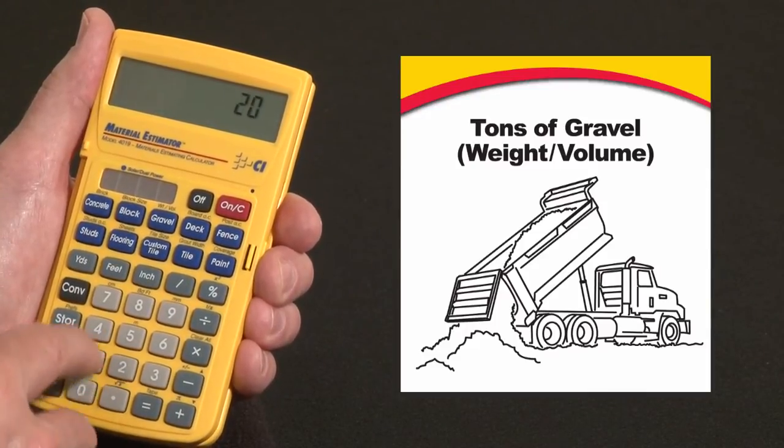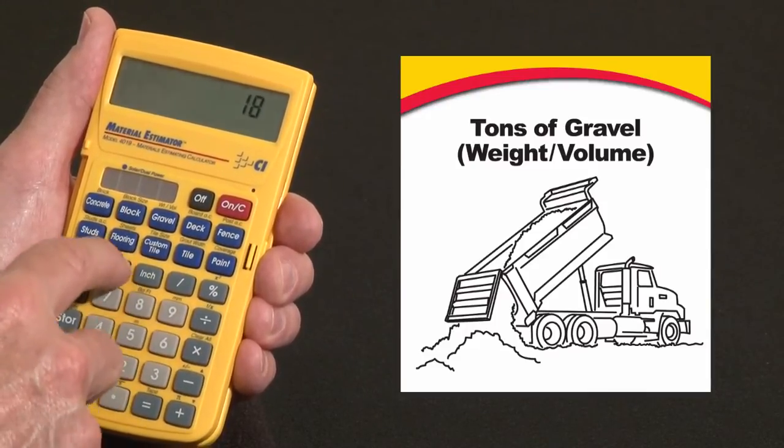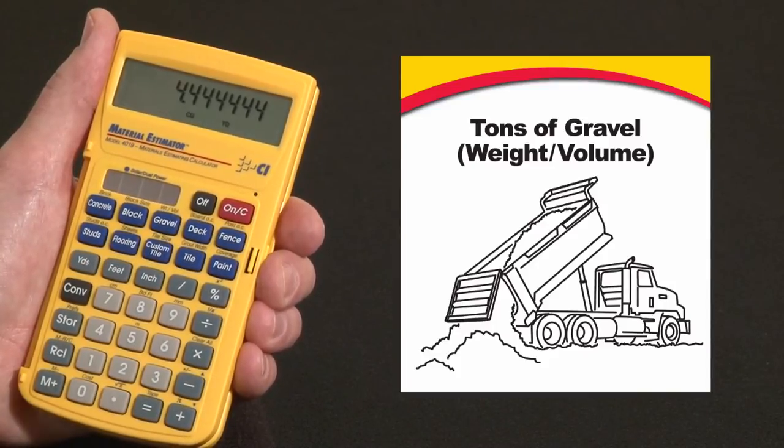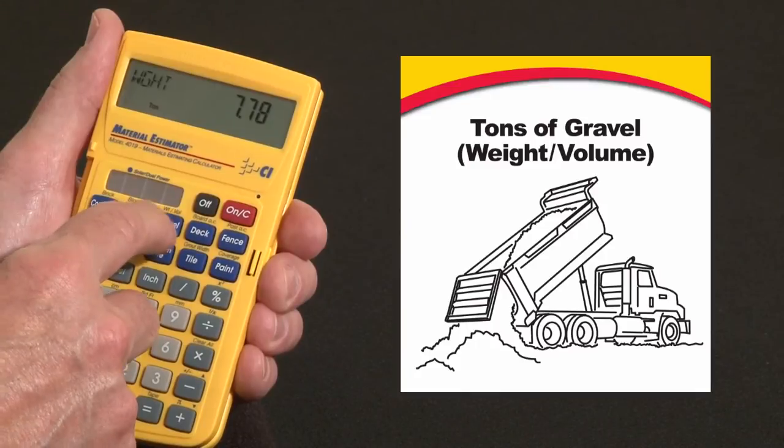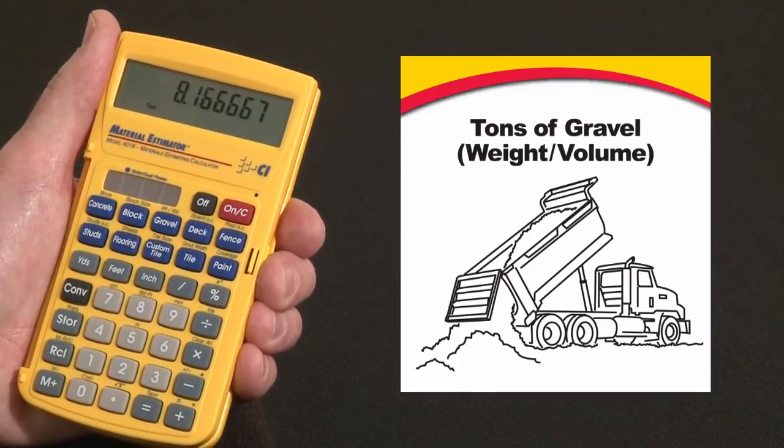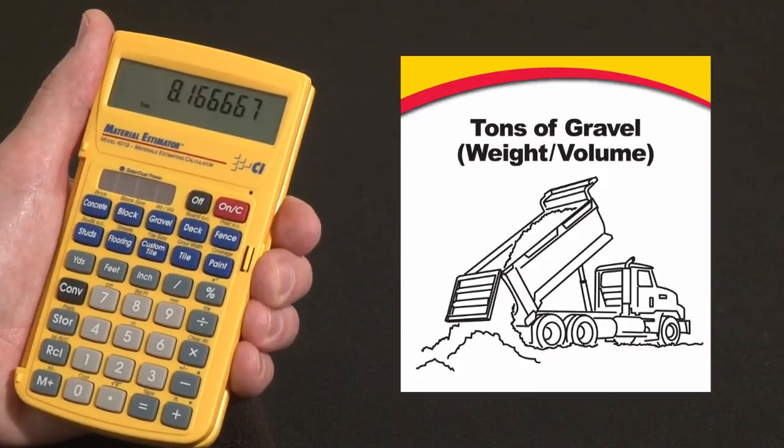That same driveway at 20 feet by 18 feet by 4 inches. There's our 4.4 cubic yards. The gravel now though is 7.78. Add that 5% for waste we did, and you're slightly over 8 tons for the gravel or decomposed granite in this case.